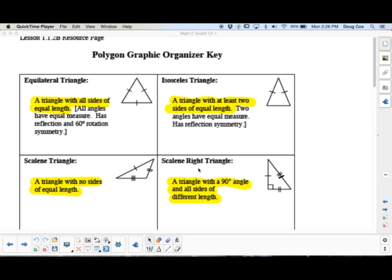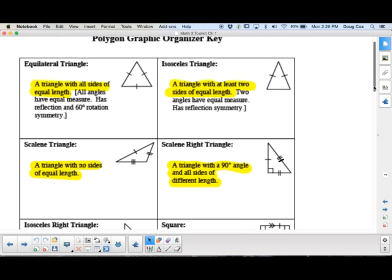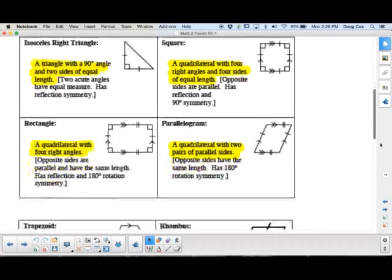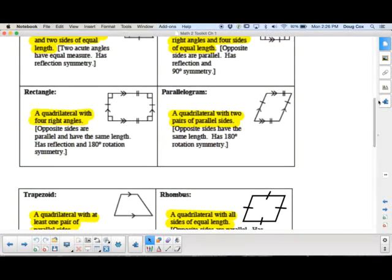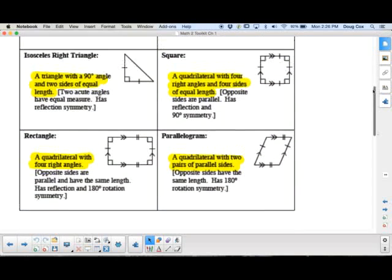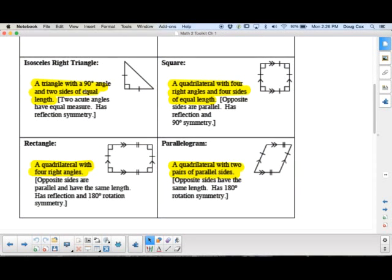We have a scalene right triangle, which is just like a scalene triangle, except it also has a 90-degree angle. So that's marked over here with this little box. Moving on to the next ones here. The next one would be an isosceles right triangle. So that would be a triangle with a 90-degree angle and then two sides of equal length. So we'd mark the two marks here and our right angle.